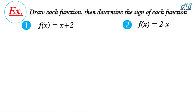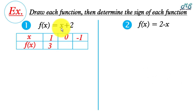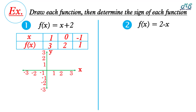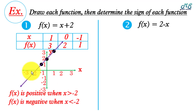Example: draw each function then determine its sign. First, f(x) = x + 2. Let x = 1, 0, -1. f(1) = 1 + 2 = 3; f(0) = 0 + 2 = 2; f(-1) = -1 + 2 = 1. Plot the ordered pairs (1, 3), (0, 2), (-1, 1) and draw the slant line. f(x) is positive when x > -2, and f(x) is negative when x < -2, and f(x) = 0 at x = -2.